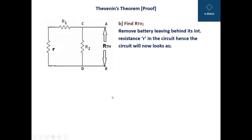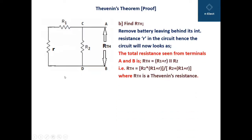Moving on to the second step: finding the value of RTH, the total internal resistance of the circuit. To find the total internal resistance, the batteries are removed and replaced by their internal resistances. The battery is removed and its internal resistance small r is shown in the redrawn circuit.